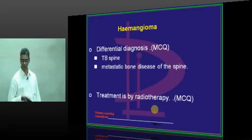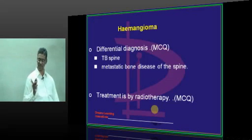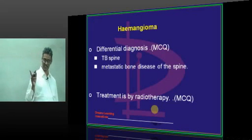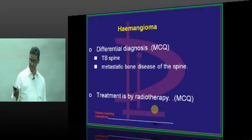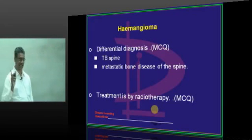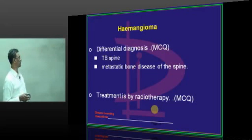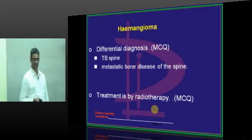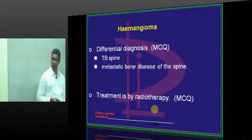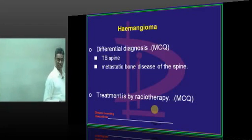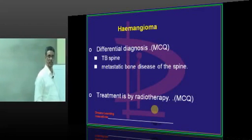For the differential diagnosis of hemangioma, one very common condition to consider is TB spine — whether it is hemangioma or TB spine, one must be very careful — and also metastatic deposits. Treatment of hemangioma is by radiotherapy.